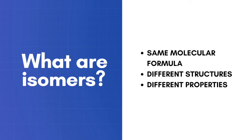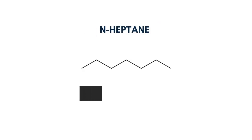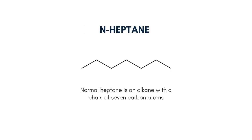Today we'll be seeing the 9 different arrangements or isomers of heptane. The first one is n-heptane or normal heptane, which is an alkane with a chain of 7 carbon atoms and a total of 16 hydrogen atoms.